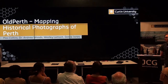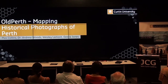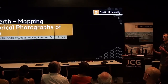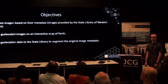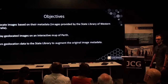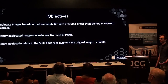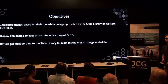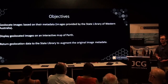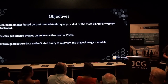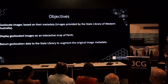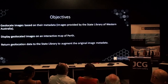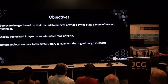So as Andrew said, I'm Max, and I was working on the Old Perth project. In this project, we were taking historical photographs taken from around Perth and the surrounding area, and we were putting them geolocationally on a map. There were three key goals: we wanted to geolocate images based on the image's metadata, which contains often a description of the image and occasionally location, but that's not always a given.